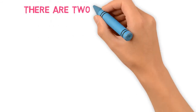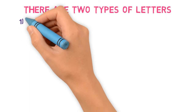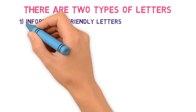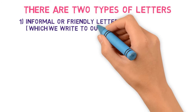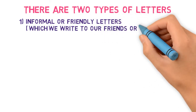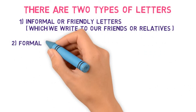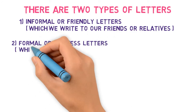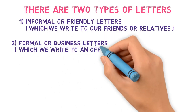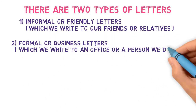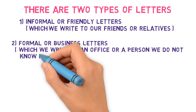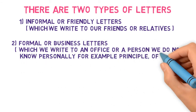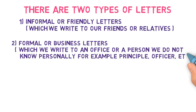There are two types of letters. Informal or friendly letters, which we write to our friends or relatives. Formal or business letters, which we write to an office or a person we do not know personally — for example, a principal, officer, etc.